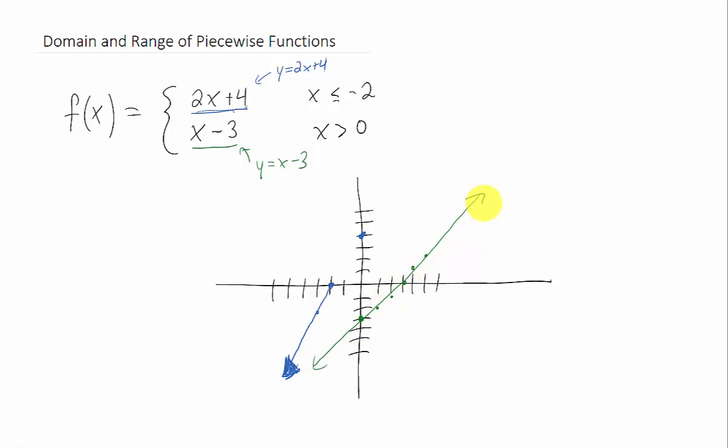Again, however, this line is only part of this function for when x is greater than 0. What does that mean? Well, all of this part of this line here where x is less than or equal to 0 shouldn't be part of this function. This green line should only be part of this function for x is greater than 0. I'm going to erase everything else.